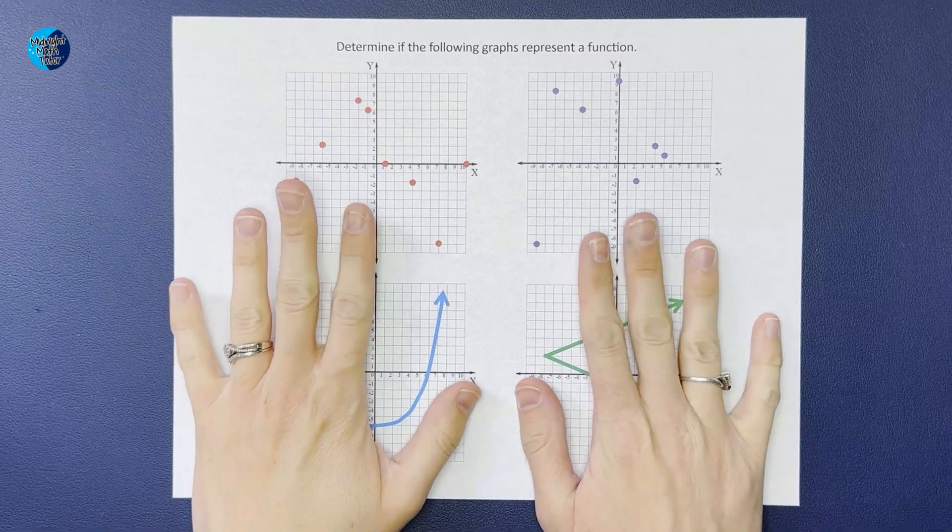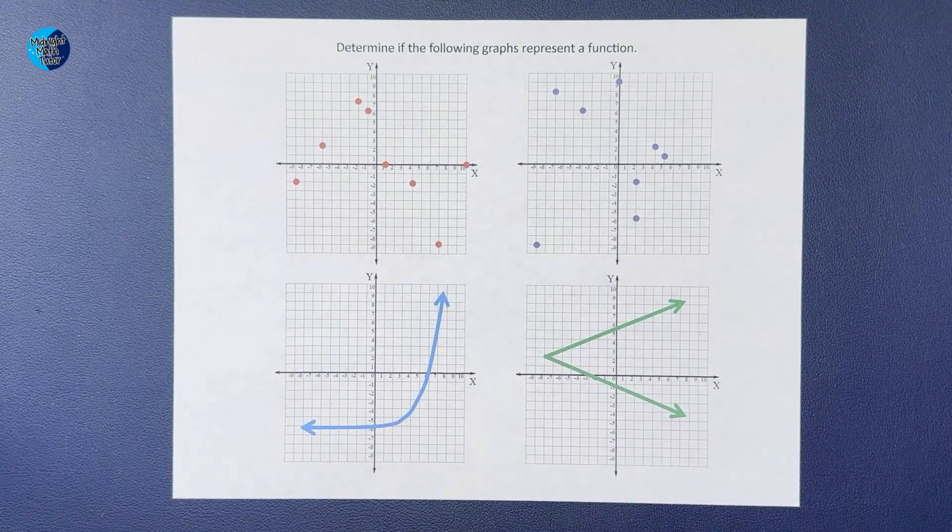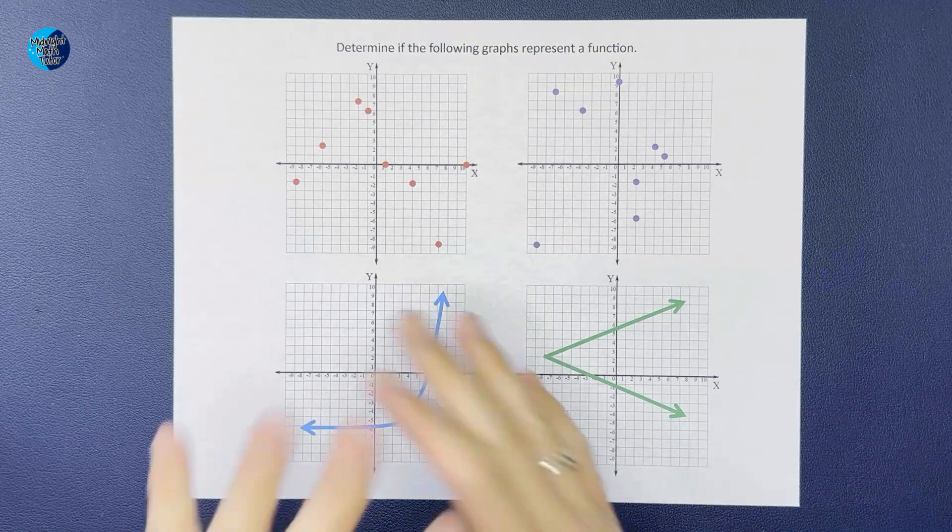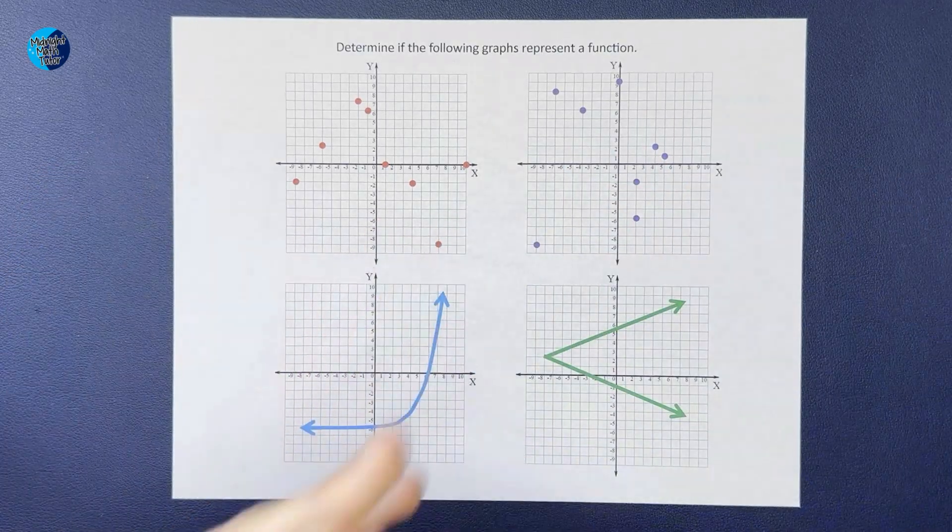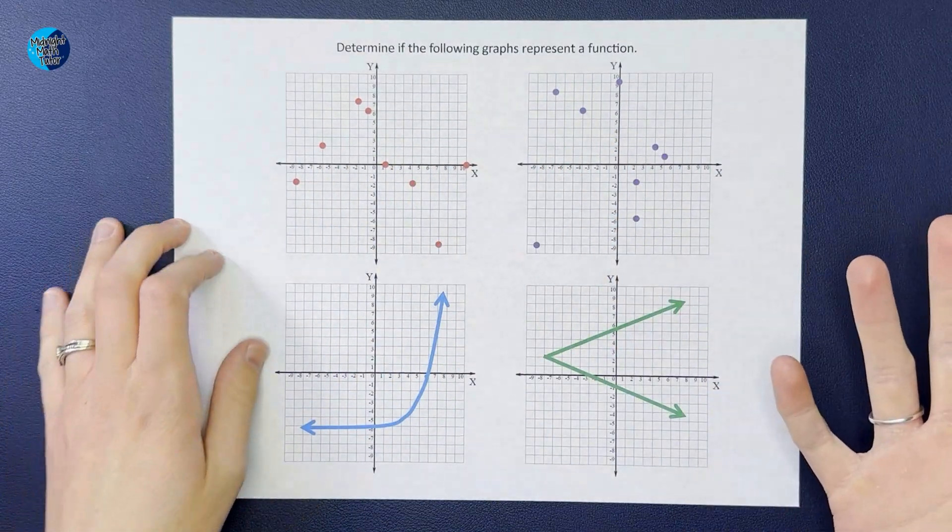Hey guys, we are looking at a bunch of graphs and we want to know if these represent a function. So in order to know what a function is, we need to know what a relation is. A relation is just a group of numbers that are related to each other, so all of these are relations.